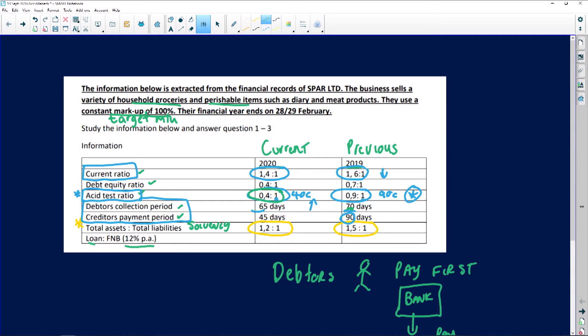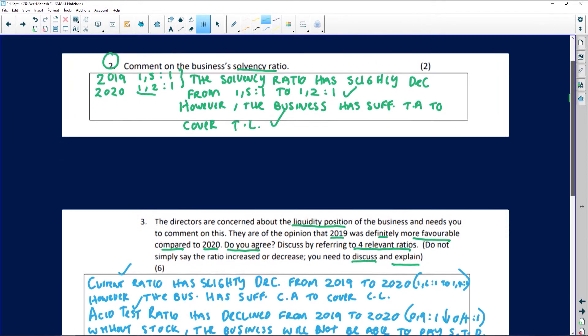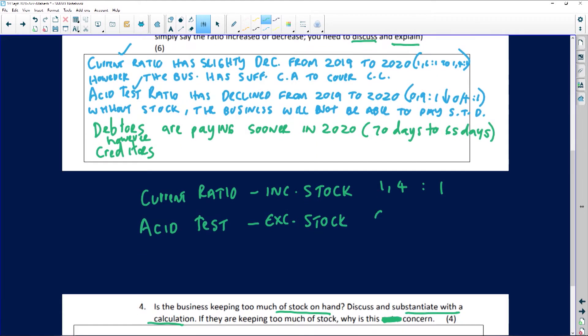And your acid test ratio 2020 is 0.4 is to 1. Okay, so 0.4 is to 1, let's write that down as well, 0.4 is to 1. Right, now in terms of stock, so remember we don't have the figures but we do have the ratios, so let's calculate stock as a ratio.